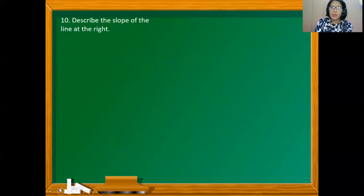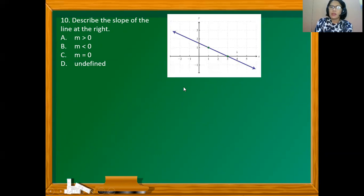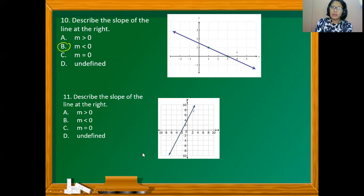Describe the slope of the line shown. Is m greater than 0, m less than 0, m equal to 0, or undefined? This is a line that leans to the left, so the slope is less than 0. How about the slope of a line that leans to the right? That should have a positive slope, so m is greater than 0.